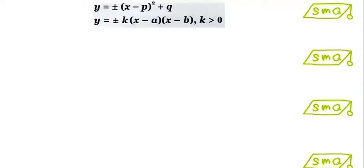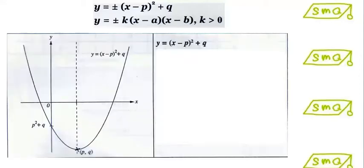We can sketch graphs of quadratic functions given in these two forms. To sketch the graph of the first form, where the coefficient of x squared is positive, we have to know that the shape of the graph resembles a smiley face.